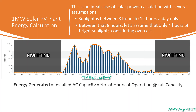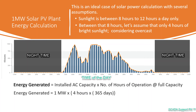We use the system to calculate the energy generated as a product of the installed AC capacity, or system size, multiplied by the number of hours of operation at full capacity. That is 1 megawatt times 4 hours multiplied by 365 days, giving us 1,460 megawatt hours or simply 1.46 gigawatt hours of energy generation.